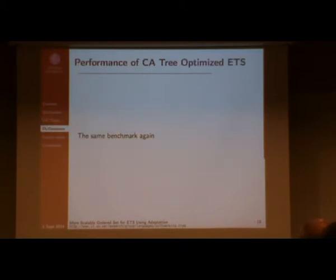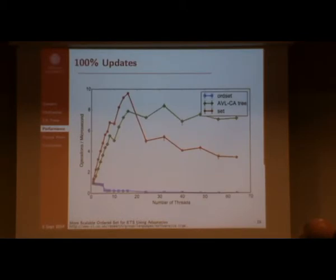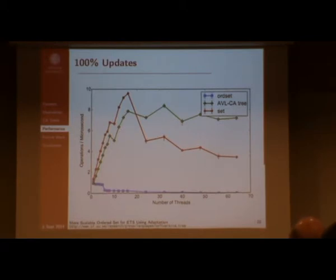Now I'll show some performance results using the same benchmark as before. Starting with 100% updates, comparing our new ordered set implementation (the green line) with the old one (the blue line), we see a substantial improvement. The red line is the set with both read and write concurrency activated, and our new implementation is actually much better than that when using multiple NUMA nodes — after 16 threads.